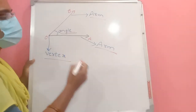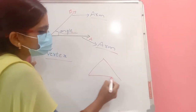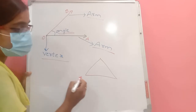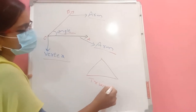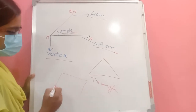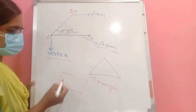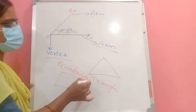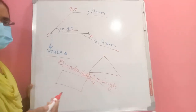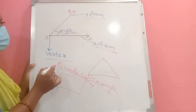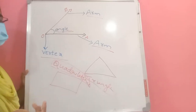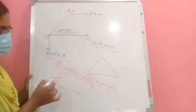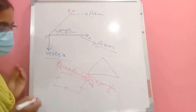A polygon with three sides is called a triangle. A polygon with four sides is called a quadrilateral. Quadrilaterals have different types — squares, rectangles, and trapeziums all come under quadrilaterals. Triangles also have different types, which we will see in this chapter.